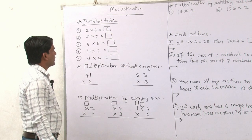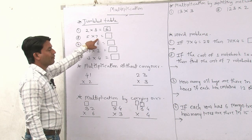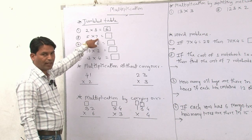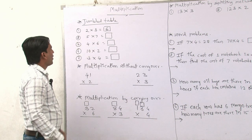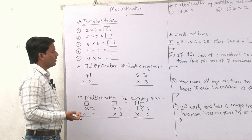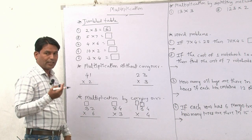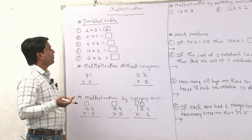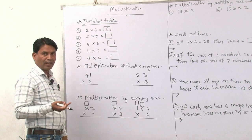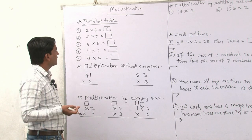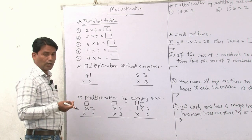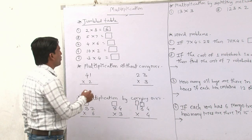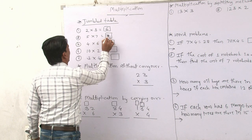After that, table of 5 up to 7th count. 5 ones are 5, 5 twos are 10, 5 threes are 15, 5 fours are 20, 5 fives are 25, 5 sixes are 30, and 5 sevens are what? 35.